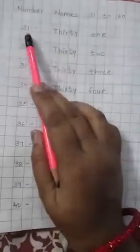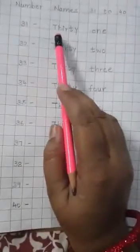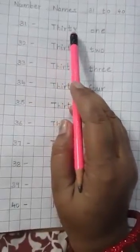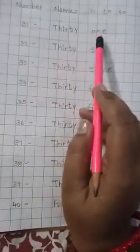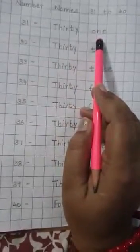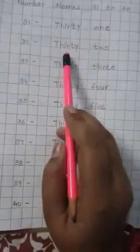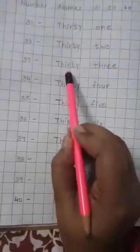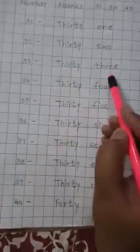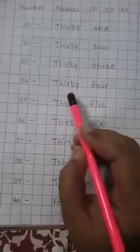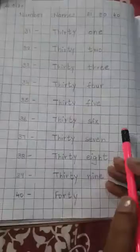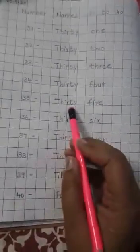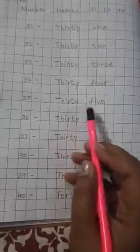The spelling of 30 is T-H-I-R-T-Y. 31, 32, 33, 34, 35.